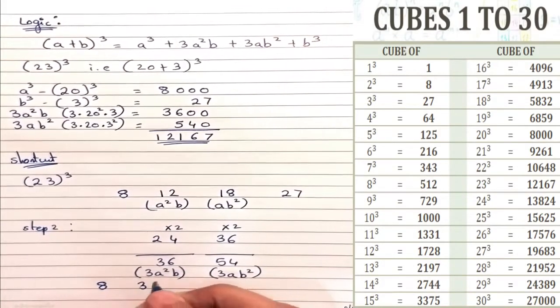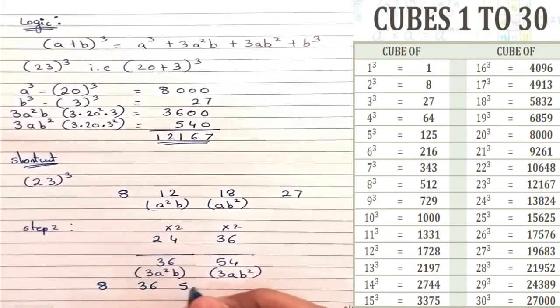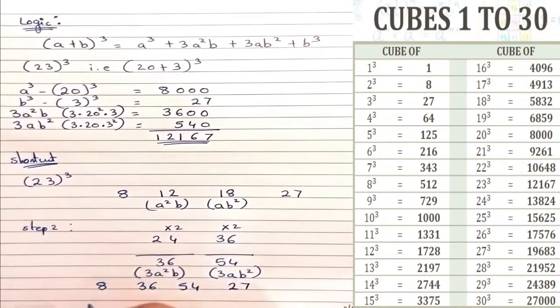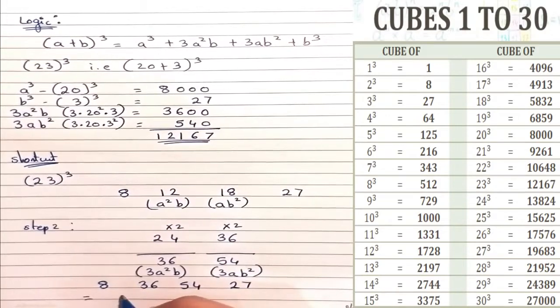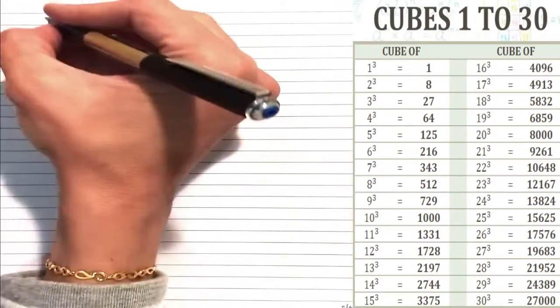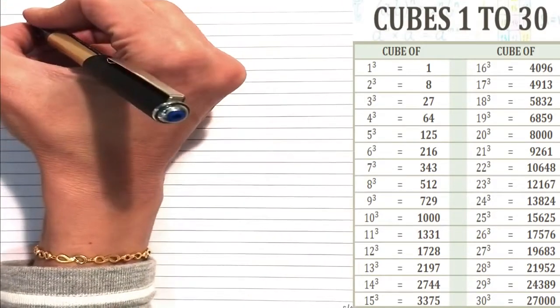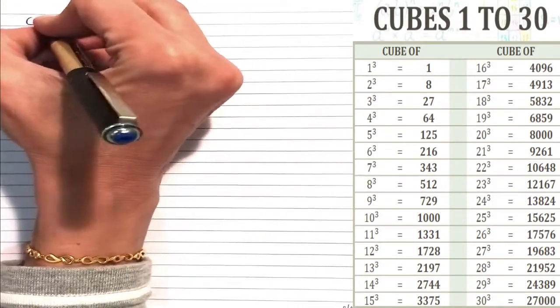Then we just add these numbers. Since it is a 2-digit number, we keep 1 digit at the end and carry over the rest.